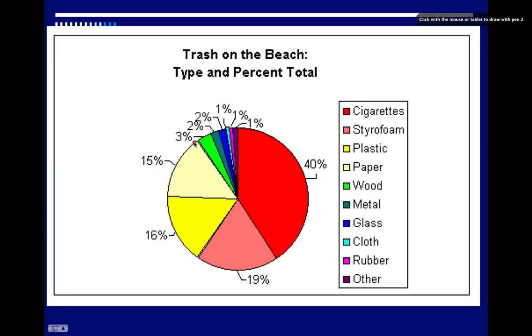And then we have wood, metal, glass, cloth, rubber, and others. So we go 93, 95, 97, 98, 99, 100. So when you do a circle graph or a pie graph what you want to do is make sure that your percents do add up to 100 to make sure that you did your work correctly.